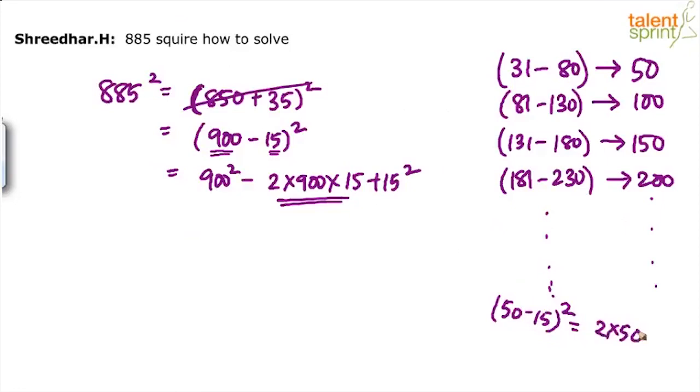a square will be 50 square, b square will be 15 square. So that will anyway remain the way it is. But what is the 2ab calculation? 2 into a into b, 2 into 50 into 15. So 2 into 50, 100 into 15, 1500.